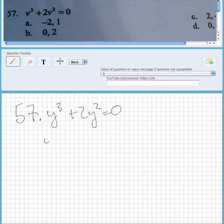The first thing I want to do is factor out a common factor. Each term has y squared, so factoring that out gives us y squared times y plus 2.